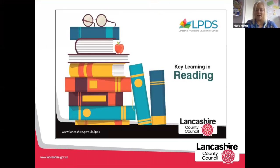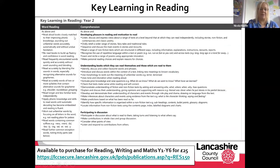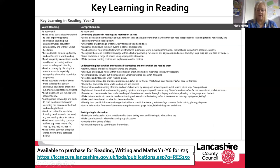First of all, as part of our suite of materials we have a document called Key Learning in Reading. This was developed based on the national curriculum and covers Year One through to Year Six. Here we've got one example — this is Year Two. These are end of year expectations based on the national curriculum, but with some additional detail to provide extra support for teachers when planning for reading. As you can see, we've got the two dimensions: word reading and comprehension. These documents are available for reading, writing, and maths from Year One to Year Six, and you can see where to purchase them at the link at the bottom.